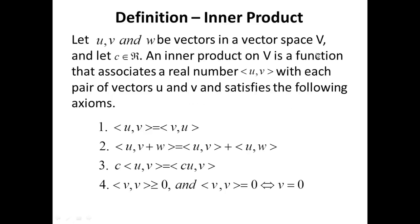Let U, V, and Omega be vectors in a vector space and let C be a real number — that is, a scalar. An inner product on V is a function denoted in this form that satisfies the following axioms: (1) ⟨U, V⟩ = ⟨V, U⟩; (2) ⟨U, V + W⟩ = ⟨U, V⟩ + ⟨U, W⟩; (3) C·⟨U, V⟩ = ⟨CU, V⟩; and (4) ⟨U, V⟩ ≥ 0, and ⟨U, V⟩ = 0 only when the vector is the zero vector.